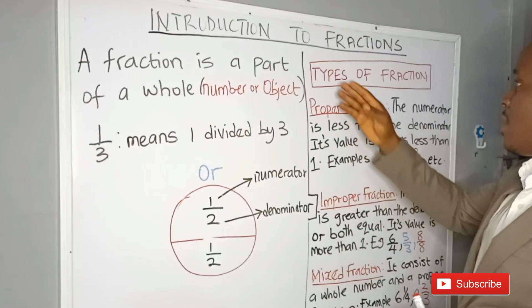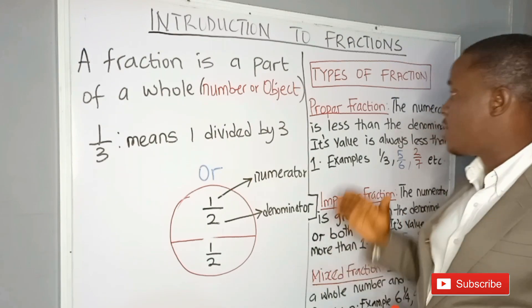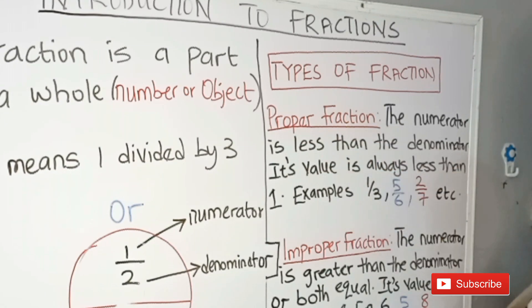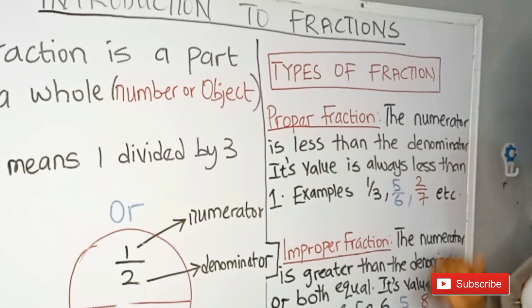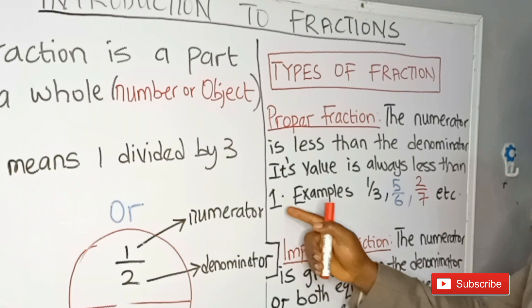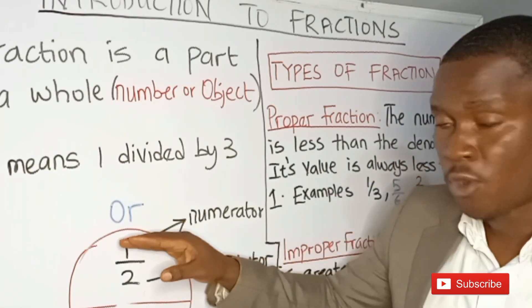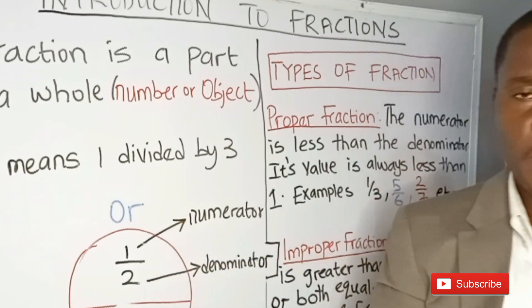So let's go over to this side. We have types of fractions. There are different types of fractions. The first type is the proper fraction. In this type of fraction, the numerator is less than the denominator. Its value is always less than one. So in a proper fraction, the number at the top is always less than the number at the bottom.